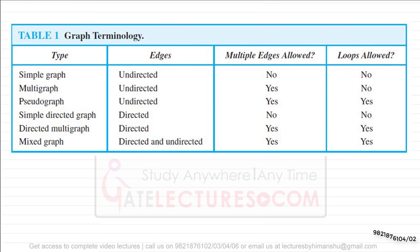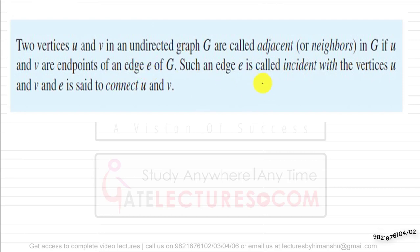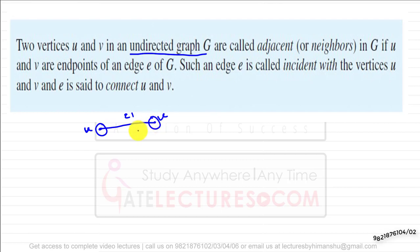Two vertices u and v in an undirected graph G are called adjacent if u and v are endpoints of an edge in G. That edge is called incident with vertices u and v, and the edge is said to connect u and v. Such vertices are called adjacent vertices.